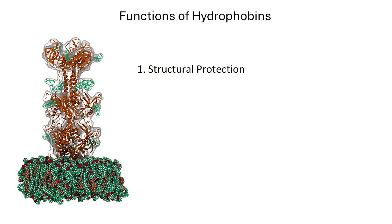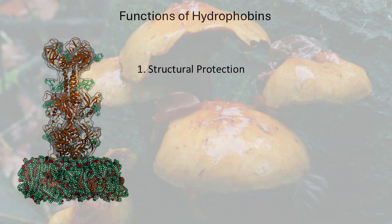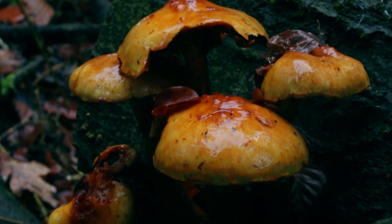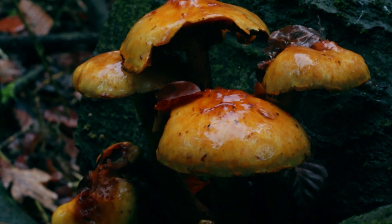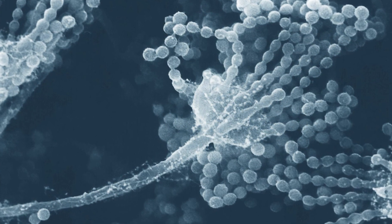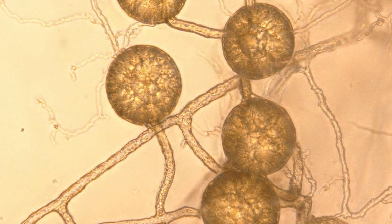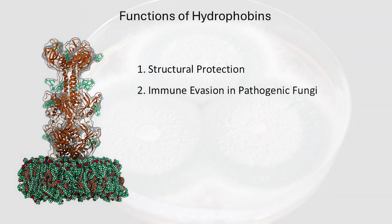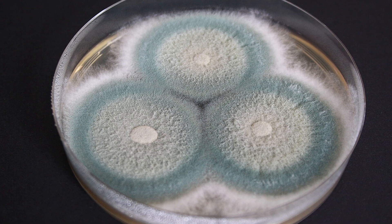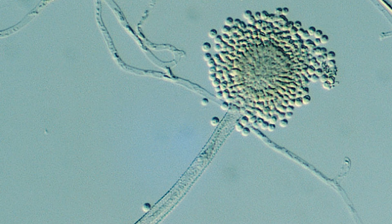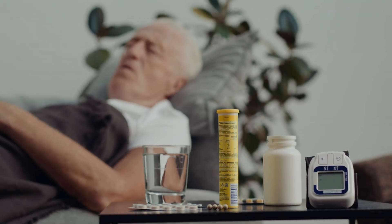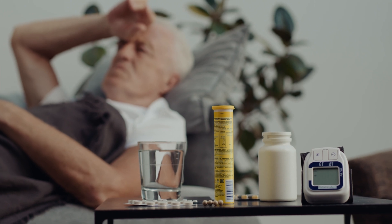Hydrophobins have several key roles in fungal spores. First, structural protection: the rodlet layer acts as a shield, protecting spores from environmental stressors such as desiccation, temperature fluctuation, UV radiation, and enzymatic degradation. These dense amyloid-like fibrils provide physical stability, preventing premature germination and extending spore viability. Second, immune evasion in pathogenic fungi: in pathogenic fungi like Aspergillus, the rodlet layer helps spores evade immune detection by masking pathogen-associated molecular patterns (PAMPs) that would otherwise trigger host immune responses. Hydrophobins also help spores resist phagocytosis, delaying recognition and destruction by immune cells.